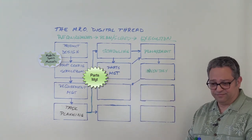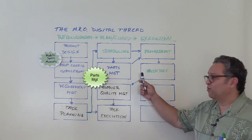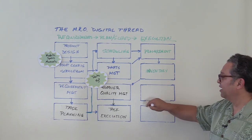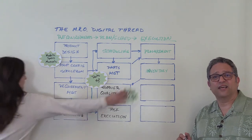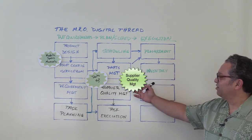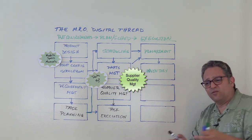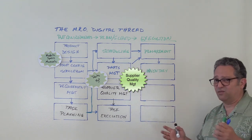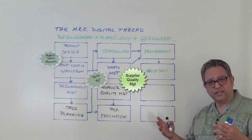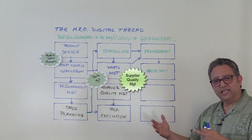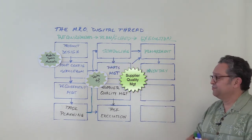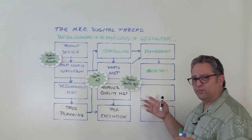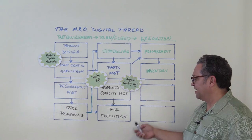Once parts arrive on time, we need to ensure they're the right quality. We involve the supplier through iBaseT's supplier quality management to check part quality before assembly — either at receiving inspection or at the source. Using our two-way portal with suppliers, we maintain all communications needed to manage quality well before it's time to install a part.